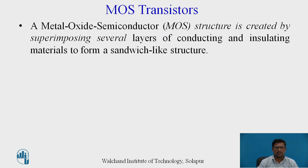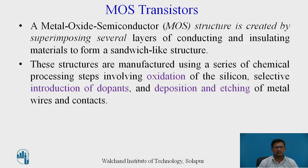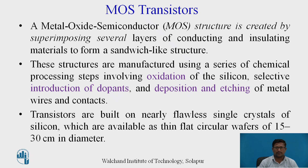A metal oxide semiconductor (MOS) structure is created by superimposing several layers of conducting and insulating materials to form a sandwich-like structure. These structures are manufactured using a series of chemical processing steps involving the oxidation of silicon, selective introduction of dopants — N-plus and P-plus dopants — and the deposition and etching of metal wires and contacts. The transistors are built on nearly flawless single crystals of silicon available as thin flat circular wafers of 15 to 30 centimeters in diameter.